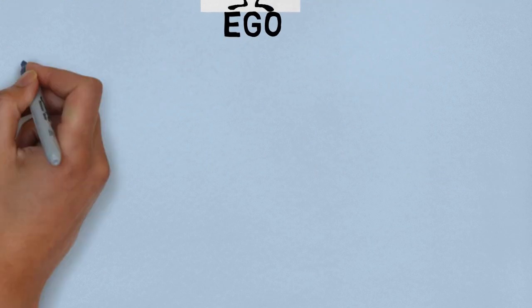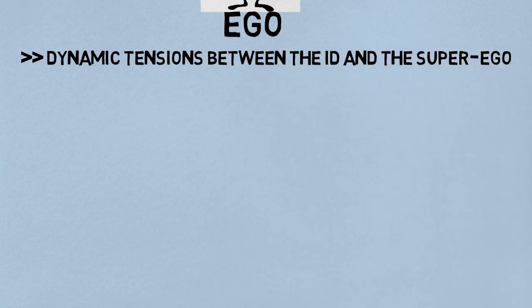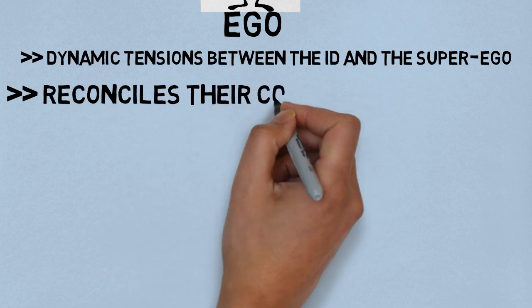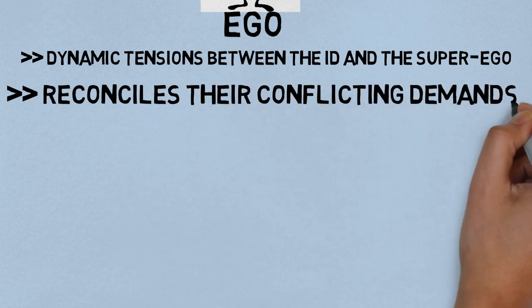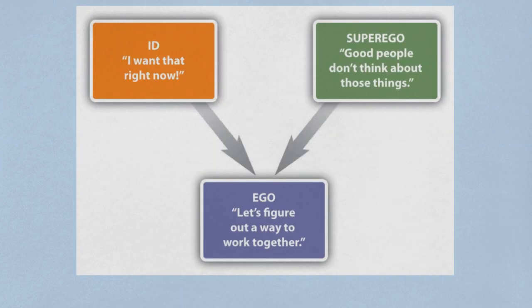While the Ego is the conscious self that is created by the dynamic changes and interactions between the ID and the Super Ego, it has the task of reconciling their conflicting demands with the requirements of external reality. The Ego coaxes with those desires. It plans to either satisfy them or suppress them.